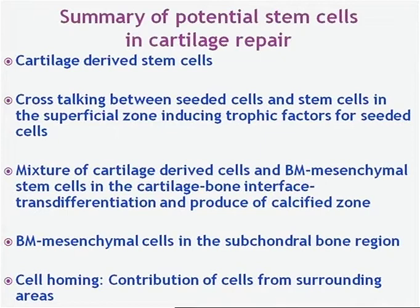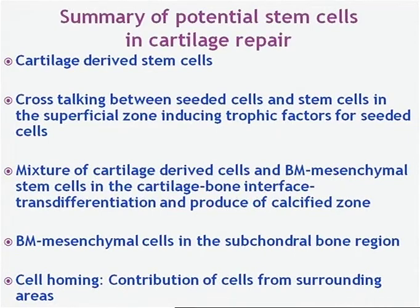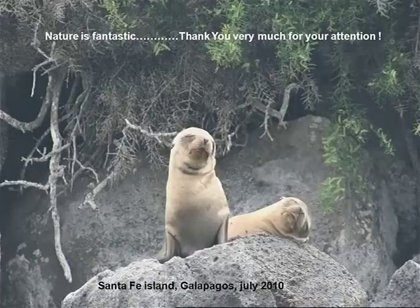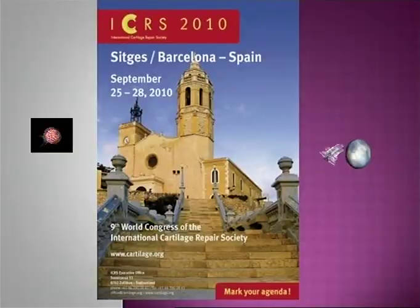A mixture of cartilage-derived cells and bone marrow mesenchymal stem cells at the cartilage-bone interface will allow transdifferentiation and production of a calcified zone. Bone marrow mesenchymal stem cells are placed in the subchondral bone region. And also, which is not yet much studied, cell homing — meaning we could have a contribution of cells from the surrounding area trafficking into the repair zone. Thank you very much for your attention.